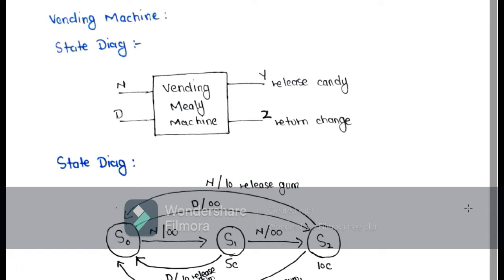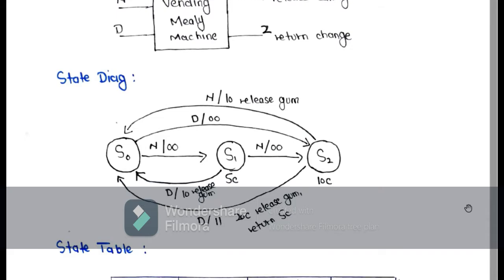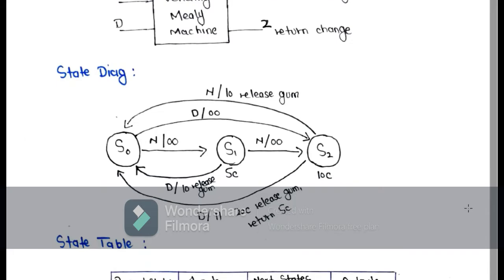Here you can see the block diagram of our circuit. The inputs are nickels and dimes, and internally we have our sequential circuit. Finally we have the outputs Y and Z — Y means release candy and Z means return the change. After that I have made a state diagram for our circuit in which we have three states.